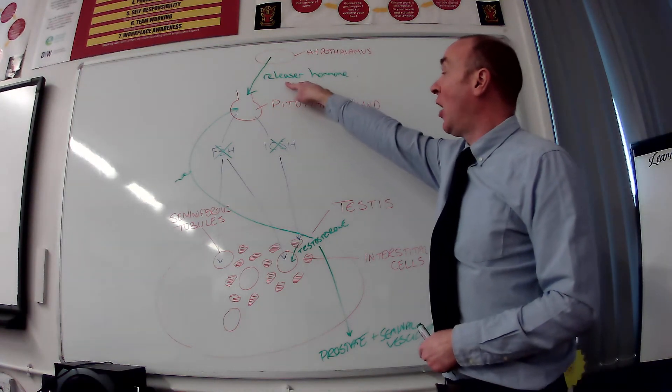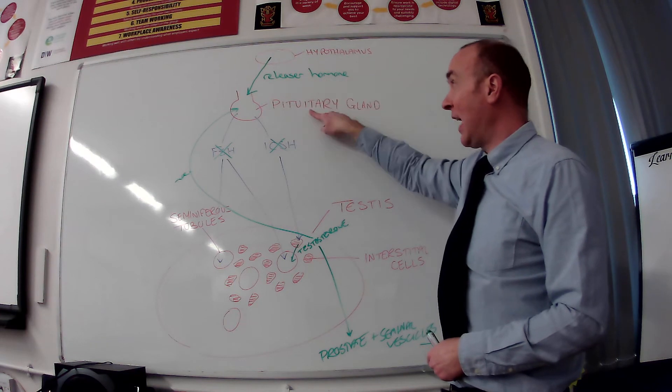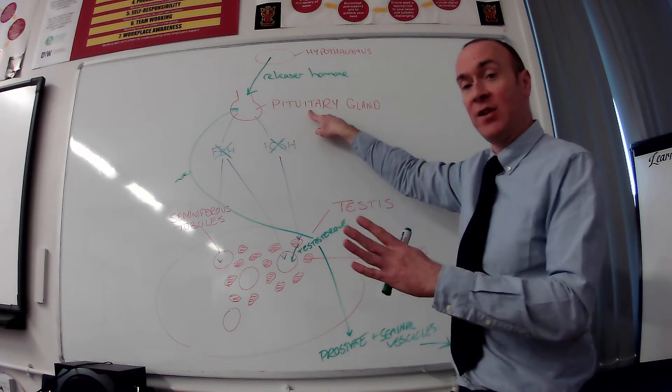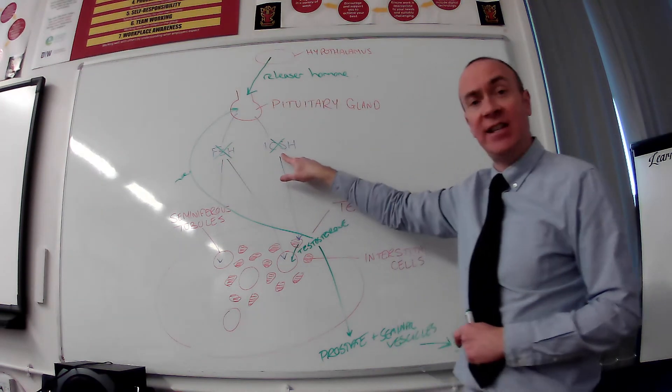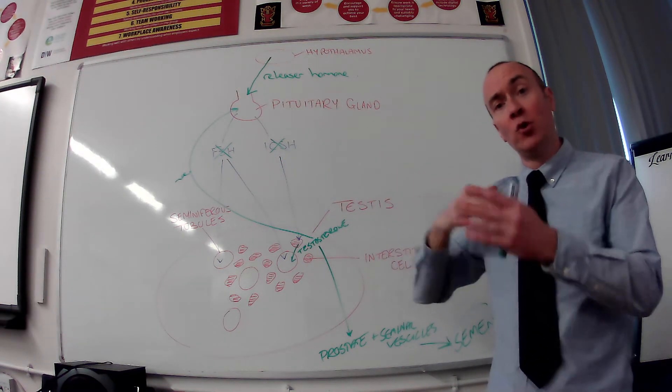Hypothalamus releases a hormone called releaser hormone, which acts on the pituitary gland. It's the very first thing you need to know. The pituitary gland is then triggered to release FSH and ICSH. And those two hormones do different things.